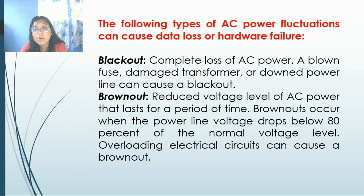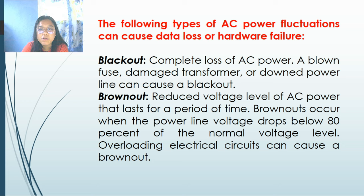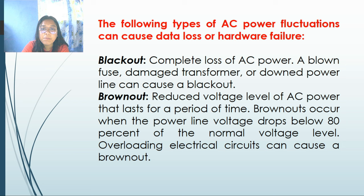There are also types of power fluctuations that can cause data loss or hardware failure. First, we have the blackout — the complete loss of power. A blown fuse, damaged transformer, or downed power line can cause a blackout, resulting in complete loss of AC power. Then, brownout — a reduced voltage level of AC power that lasts for a period of time, occurring when power line voltage drops below 80% of normal voltage level.